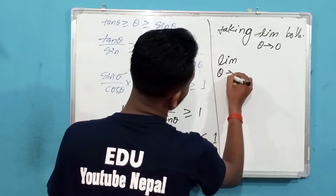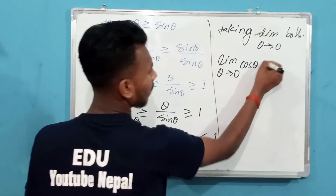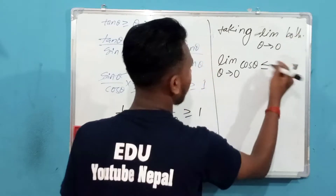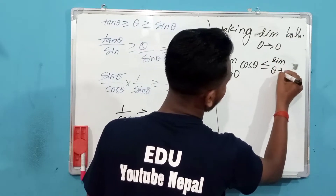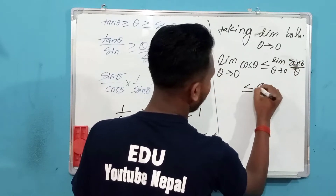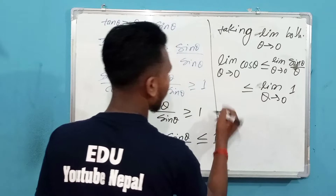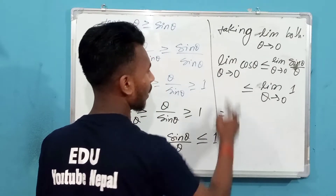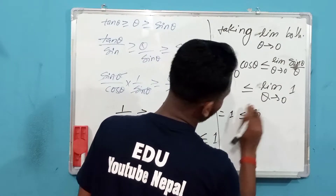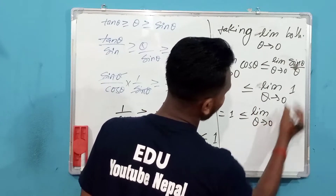Taking the limit as theta tends to zero on both sides: limit theta→0 of cos theta is equal to 1, and limit theta→0 of 1 is equal to 1. The middle term limit theta→0 of sin theta divided by theta is squeezed between them.